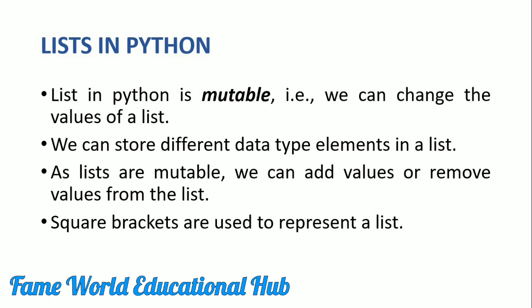Basically, a list is a mutable entity. Mutable means we can make changes. The very important thing is that a list is a collection of different data type elements. We can store different data type elements in a list, and we represent lists with the help of square brackets, just like arrays in C, C++, and Java. But the difference between arrays and lists is that in a list we can store different data type elements.